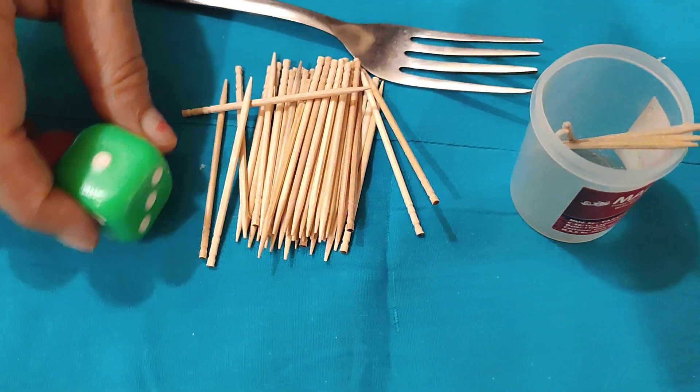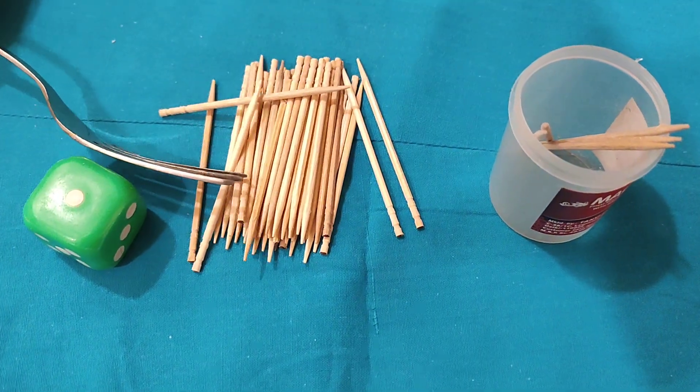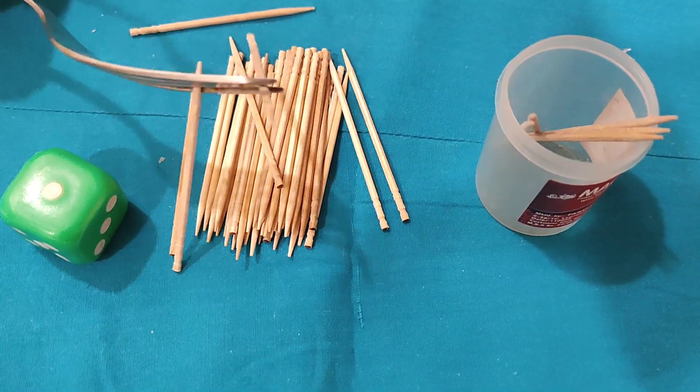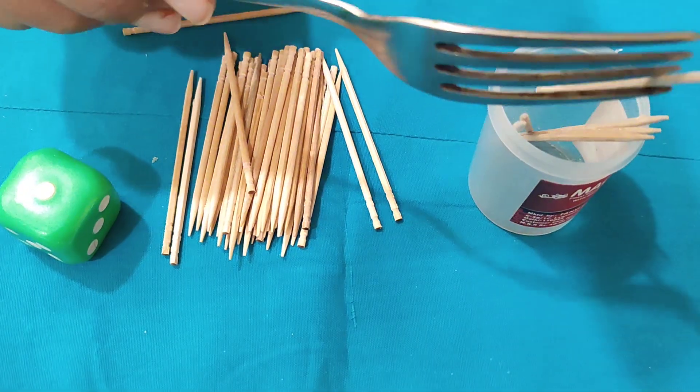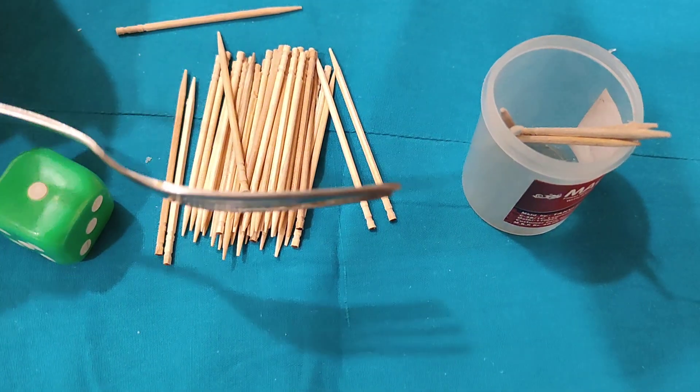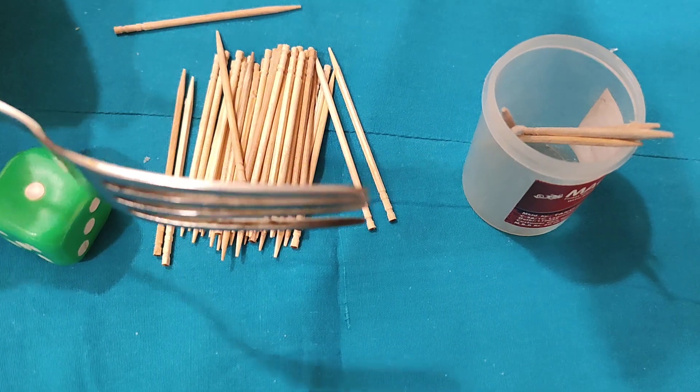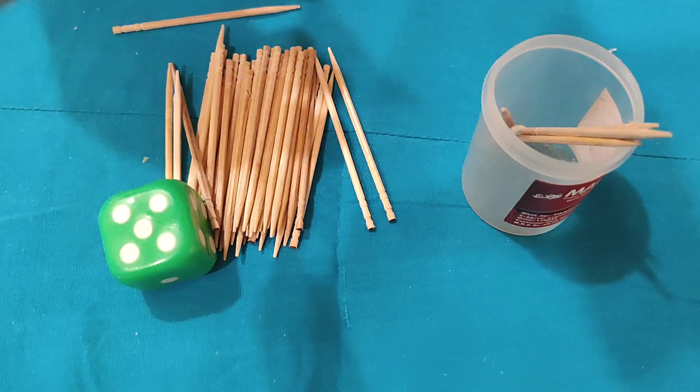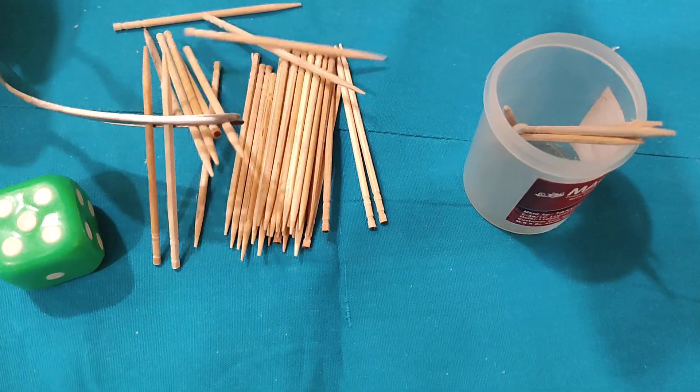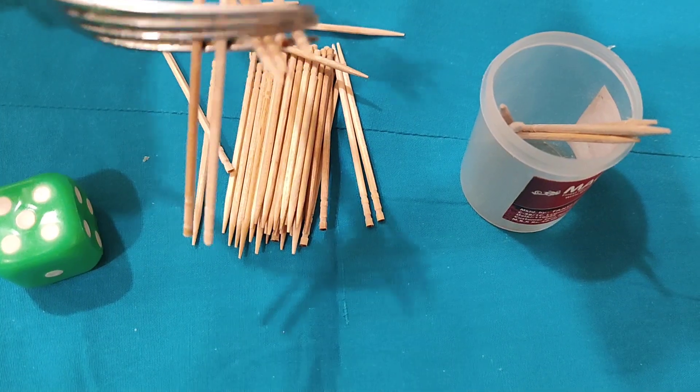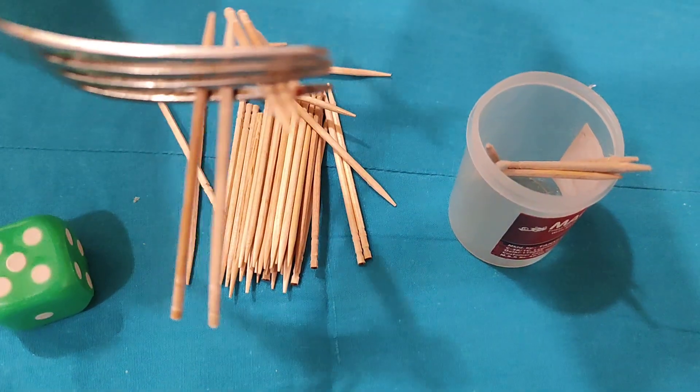Then I will roll again and it's 1, so I have to take 1 toothpick. In this way, see, you have to keep the fork in this way, not to drop it but to keep it balanced. I will do it again. I rolled 5, so I will take 5 toothpicks. Now I have to take 6 toothpicks: 1, 2, 3, 4, 5.